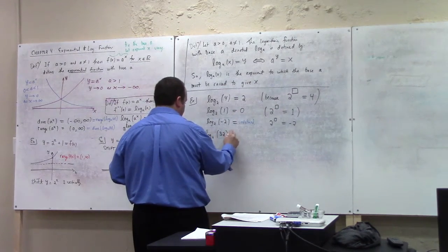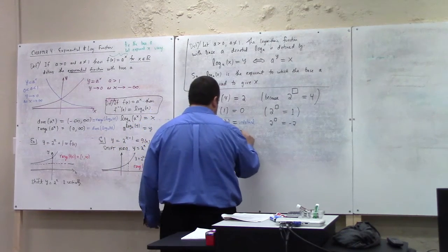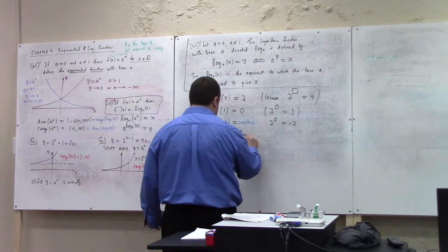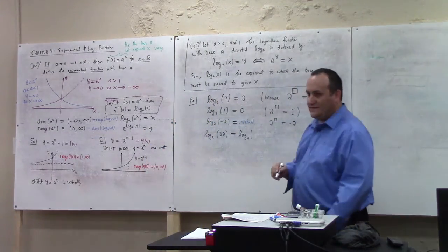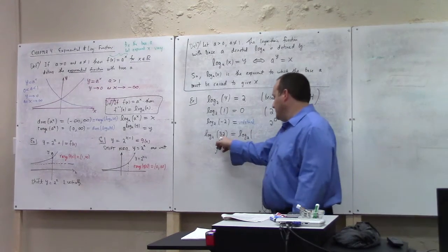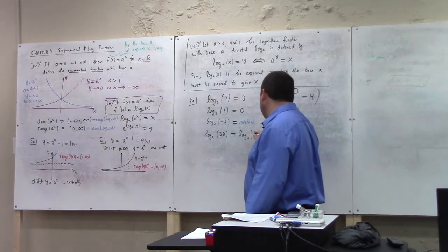of 32. So let me suggest to you we look at it this way instead. Think about rewriting 32 as 2 to a power. That's the easier way for me to do these anyway. What's 32? 32 is 2 to the fifth.